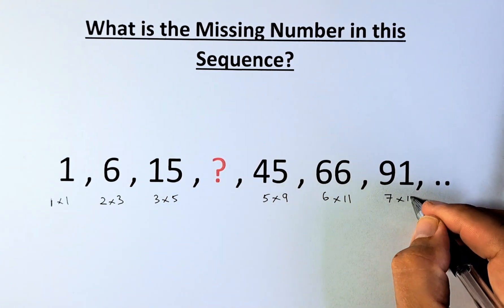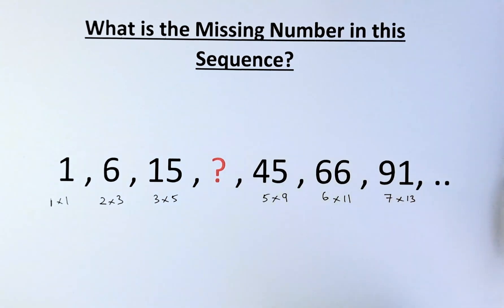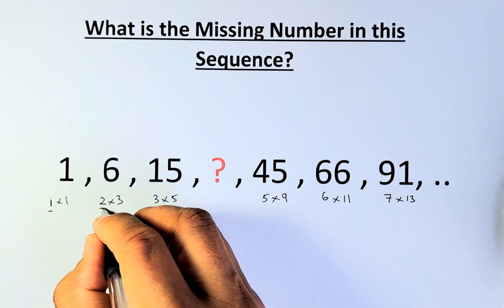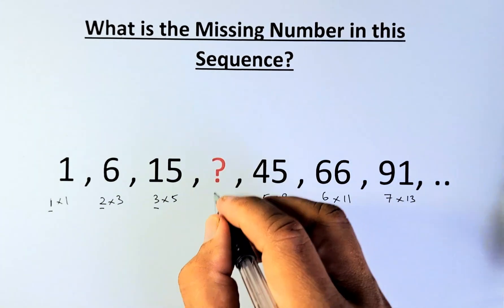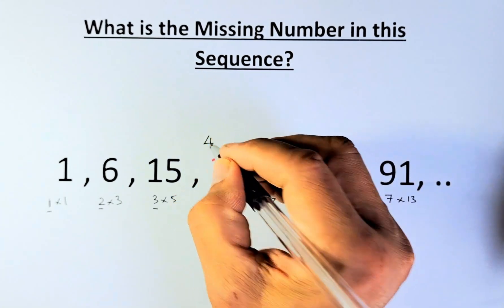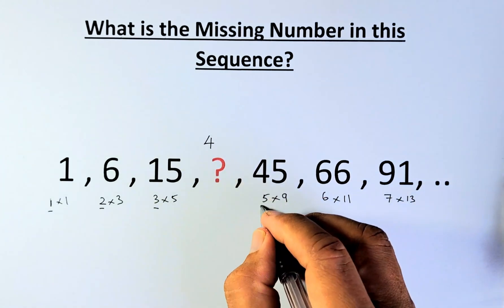What do they have in common? If you look at the first number: 1, 2, 3, this must be the 4th. This is the question mark. The next number will be 4, followed by 5.